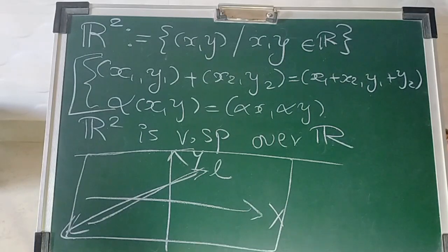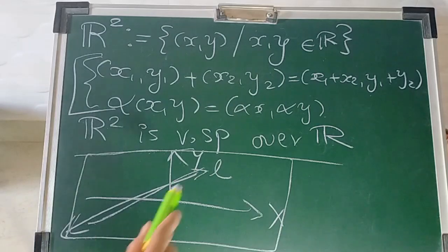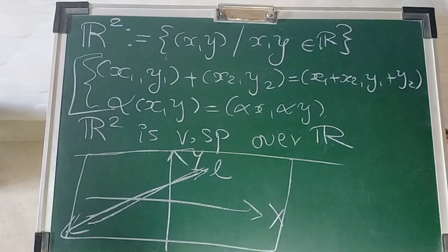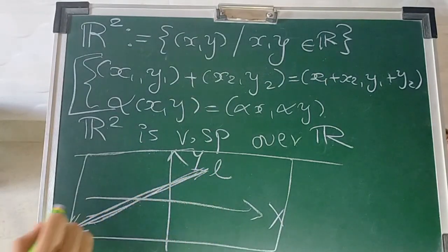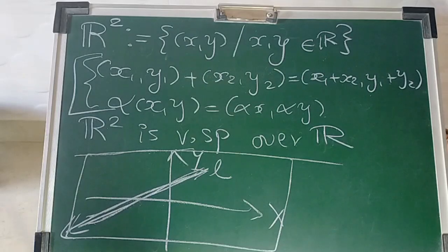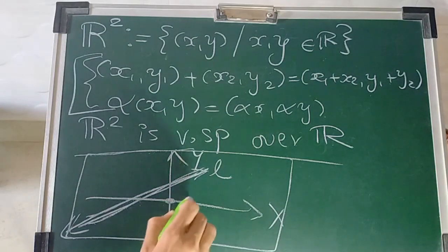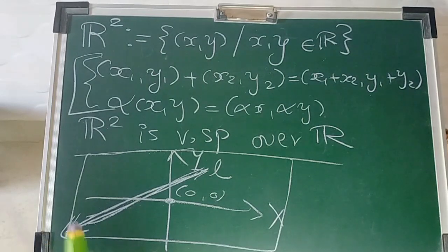If this line is a subspace, it must satisfy the property of addition identity — that means there must exist an element on this line such that adding it with any other point on the line gives the same point. The only such point is (0, 0).